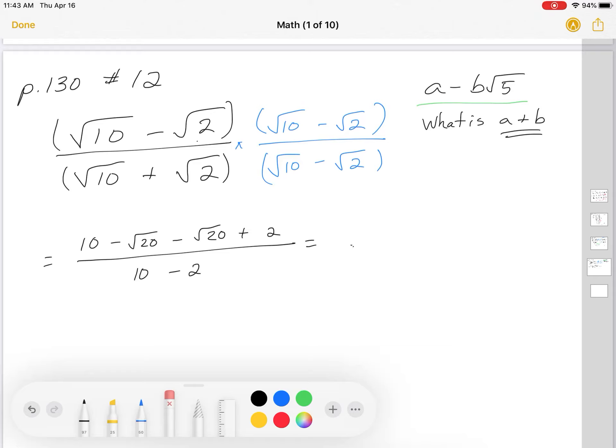So I have 10 plus 2, which is 12. Right? And then I have minus 2 root 20, and we'll simplify those further. On the bottom, I have 10 minus 2, which is 8.